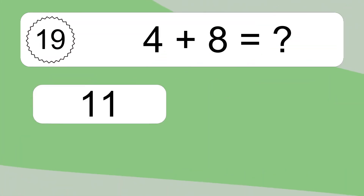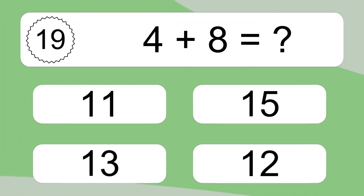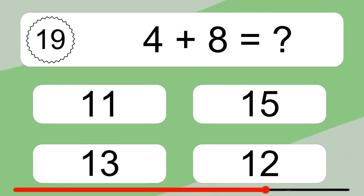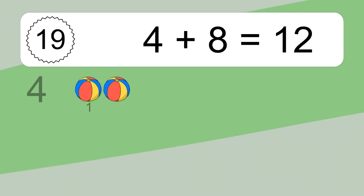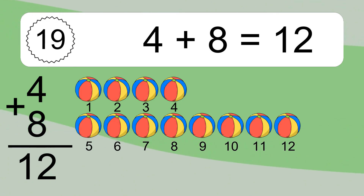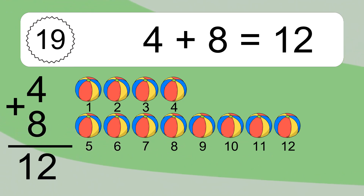4 plus 8 equals what? 4 plus 8 equals 12. Let's count it: 1, 2, 3, 4, 5, 6, 7, 8, 9, 10, 11, 12.